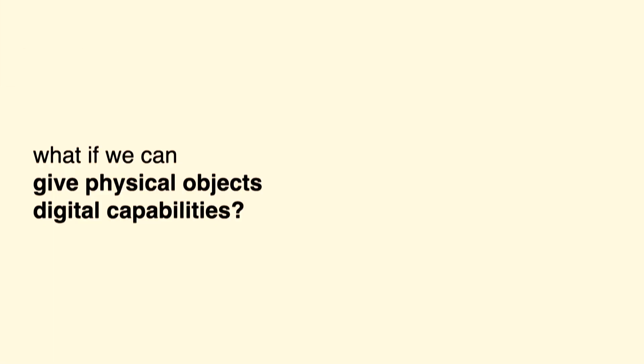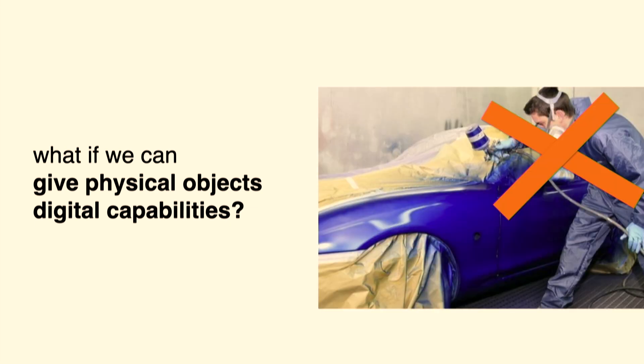In my research, I'm asking myself: what if you can actually give physical objects digital capabilities, so that we don't have to use these complicated processes for our physical objects anymore, and we could change the color of a car as simply as a single mouse click? This is what I'm going to talk about today, which is reprogrammable appearances. Let me show you the technology we developed.